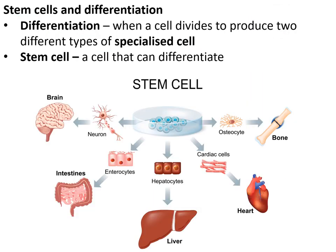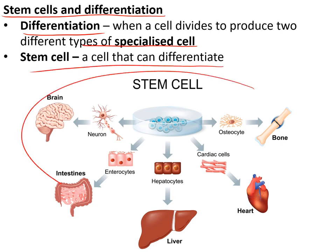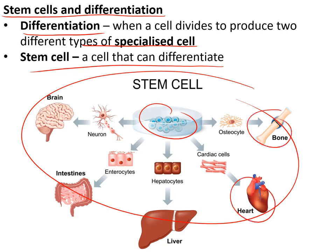Stem cells are a type of cell that can do differentiation — when a cell divides to make two different types of specialised cell. A stem cell can differentiate into many different kinds of cell.